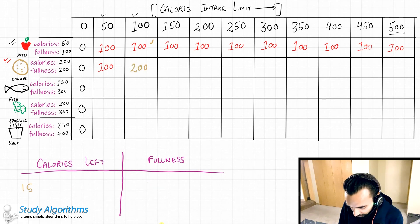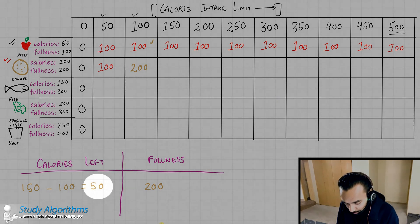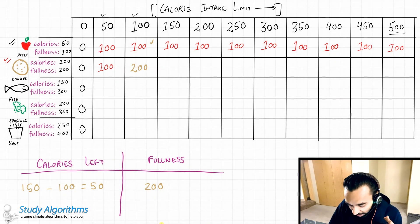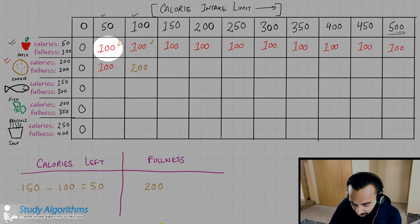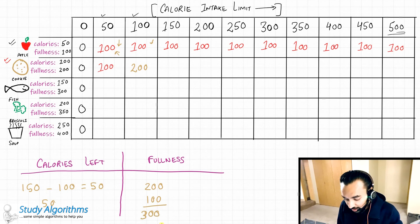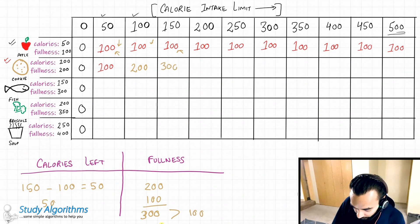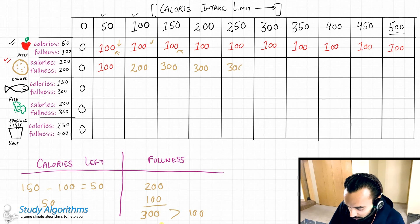Now I have 150 calories. I eat the cookie and have 50 calories remaining, getting a fullness value of 200. With 50 calories remaining, I look up the table and the maximum fullness I could get is 100. I add 100 to 200, giving a new fullness value of 300. This is greater than the 100 from just eating an apple, so I update this value to 300. Since I have now eaten both the cookie and the apple, I update all remaining values to 300.